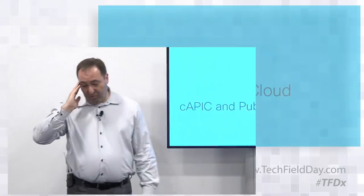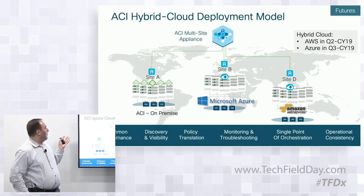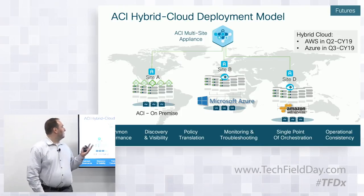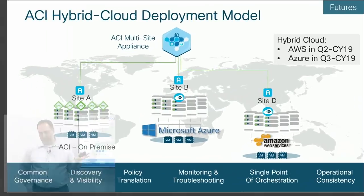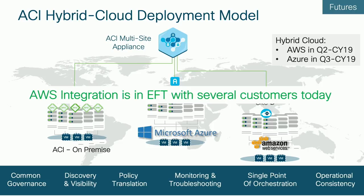Amazon deploys a cloud APIC. Everywhere we have an APIC cluster it becomes a site — we're trying to keep the semantics of how we do forwarding the same wherever you are. The ACI hybrid cloud deployment model for AWS comes out in Q2 of this year; the Azure integration comes out in Q3. We already have a bunch of customers using early field trials for AWS — this is existing code now in customer hands.